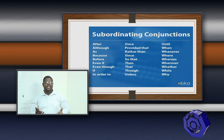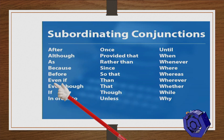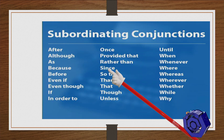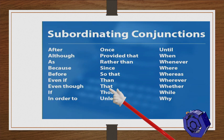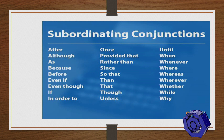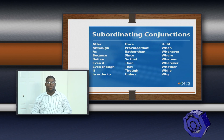Here is a list of subordinating conjunctions: after, although, as, because, before, even if, even though, if, in order to, once, provided that, rather than, since, so that, than, that, though, unless, until, when, whenever, where, whereas, wherever, whether, while, why. This is not an exhaustive list — there are other examples, and I encourage you to look them up and do some research.